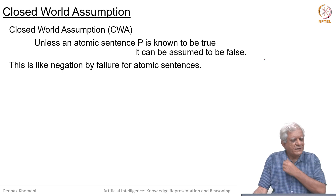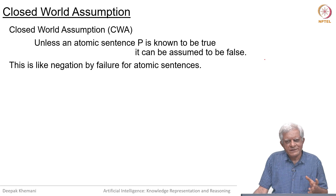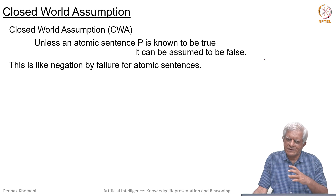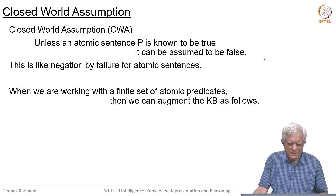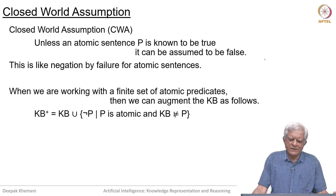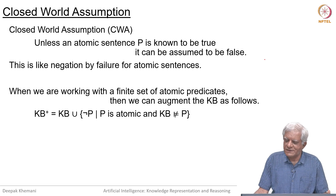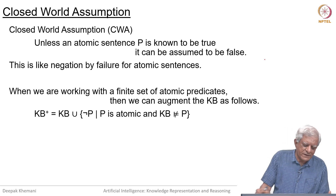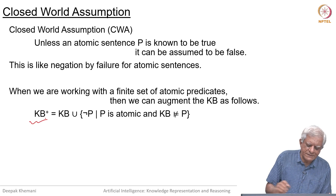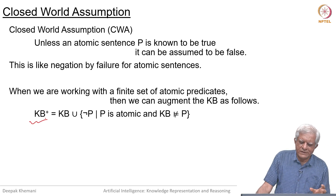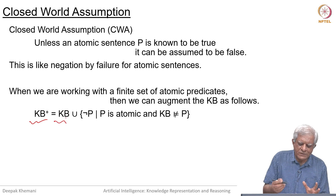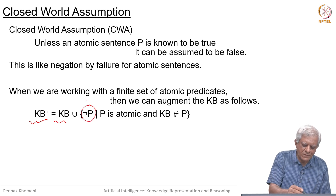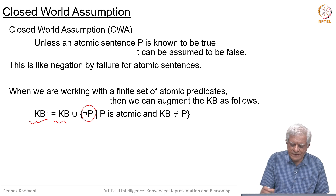What we want to do is augment our knowledge base by saying that certain propositions are not true. If we are working with a finite set of predicates, we can construct a new knowledge base KB-plus by taking the old knowledge base KB and adding to it all sentences of the form 'not p', where p is an atomic sentence that the knowledge base does not entail.